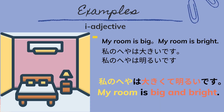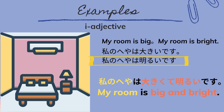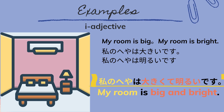Our first example for i-adjective is: 'My room is big' and 'My room is bright.' Since they share the same topic, we can combine them using Te-form.